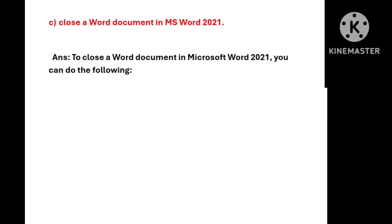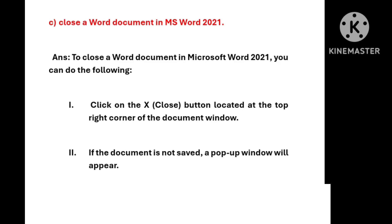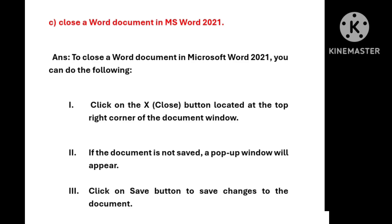Our last question is: close a word document in MS Word 2021. To close a word document in MS Word 2021 you can do the following: click on the cross or close button located at the top right corner of the document window. If the document is not saved, a pop-up window will appear. Click on Save button to save changes to the document, and the document will get closed.